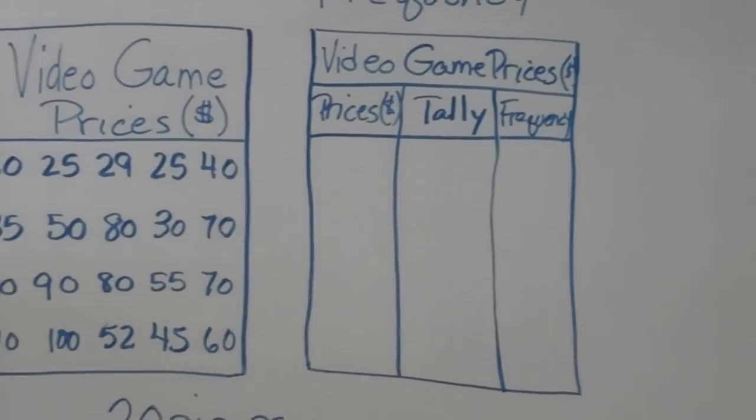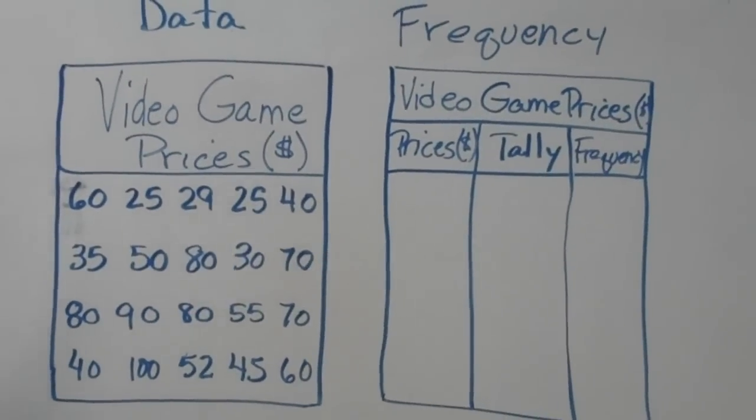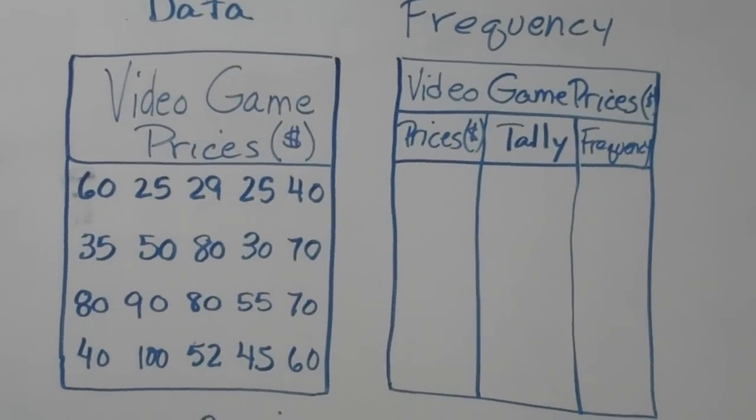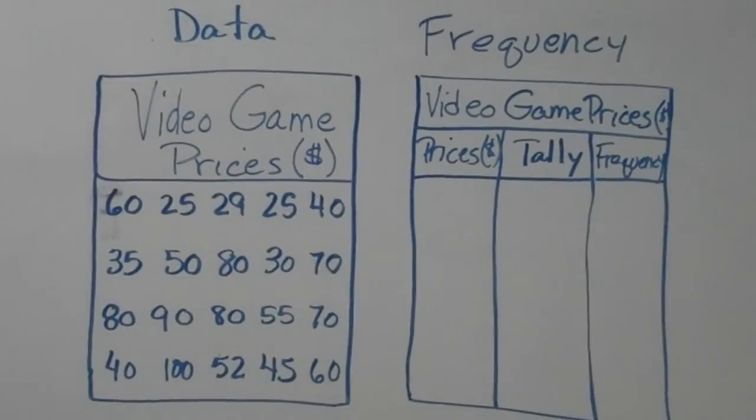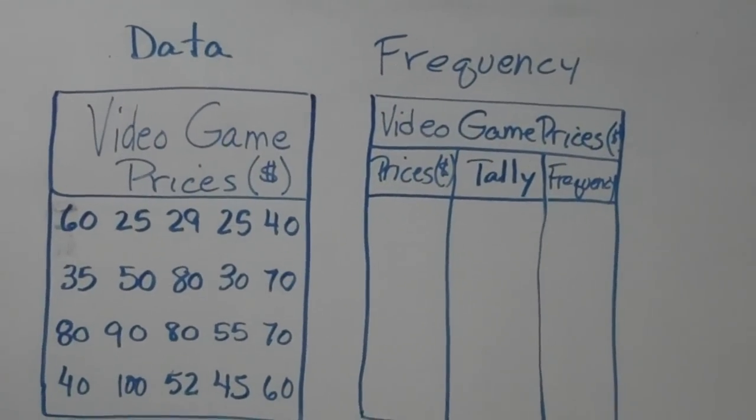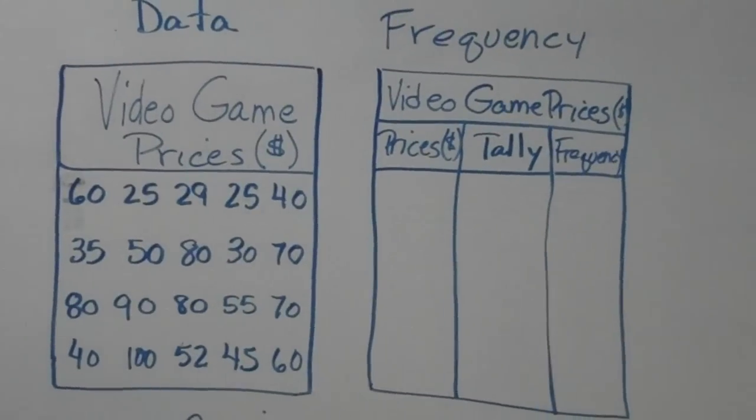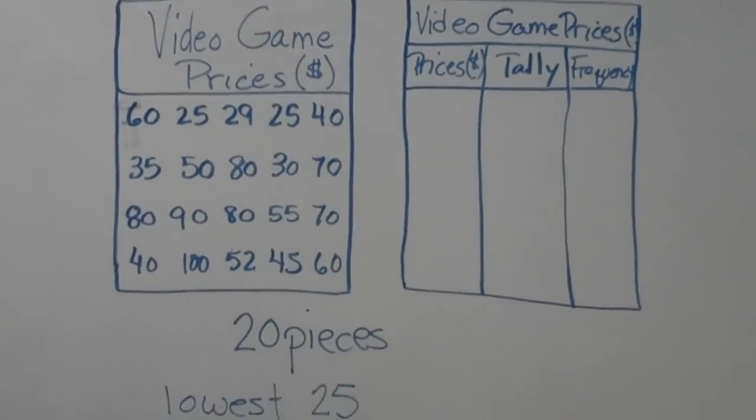Alright, looking back over at our data table, we are going to look at the lowest number of our data to our highest. Our lowest looks like it's at 25. So our lowest, we're just going to make a note of that so we don't forget. Our highest piece of data, or the highest cost, was 100, a whopping 100.